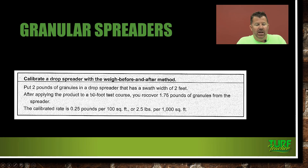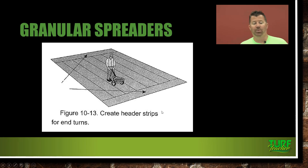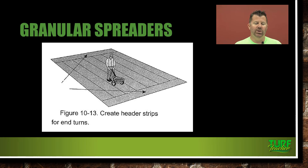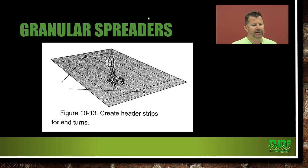Weigh-before-and-after method: put 2 pounds of granulars in a drop spreader with a 2-foot swath width. After applying to a 50-foot test course, 1.75 pounds remain. Difference is 0.25 pounds used. Rate = 0.25 ÷ (2 ft × 50 ft) × 1,000 = 2.5 pounds per 1,000 square feet. When using a drop spreader, always do header strips at the ends so you can stop dropping product before turning and avoid over-applying at the turn areas.